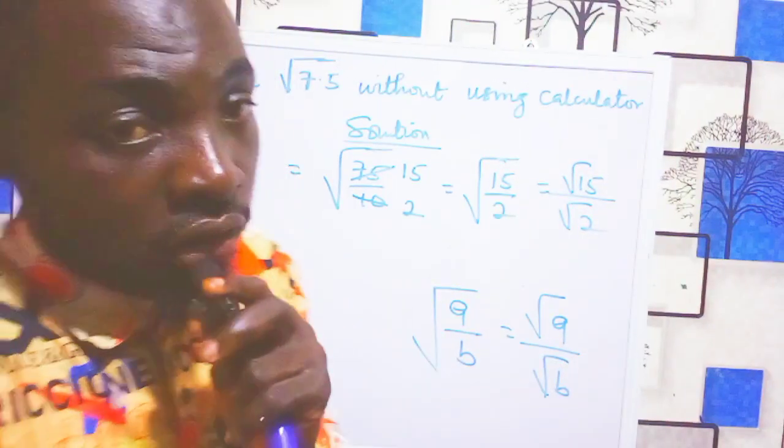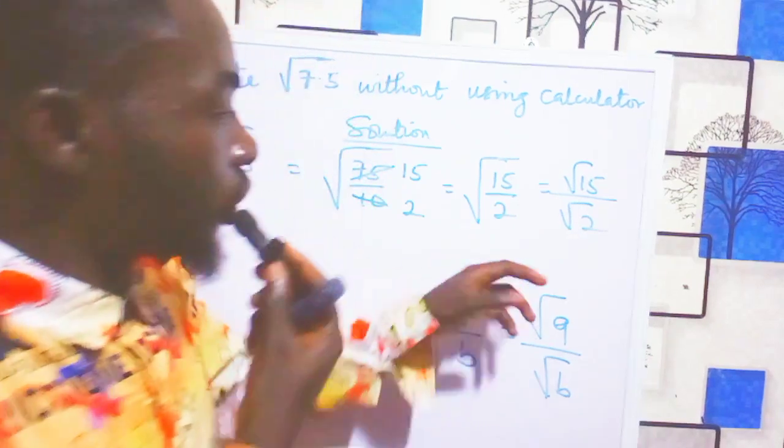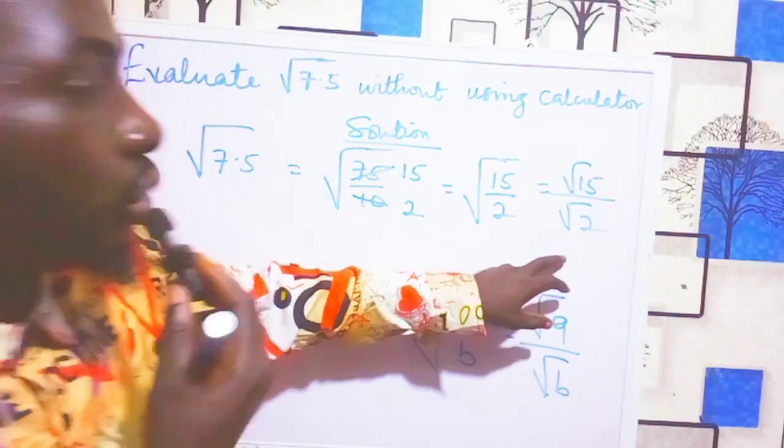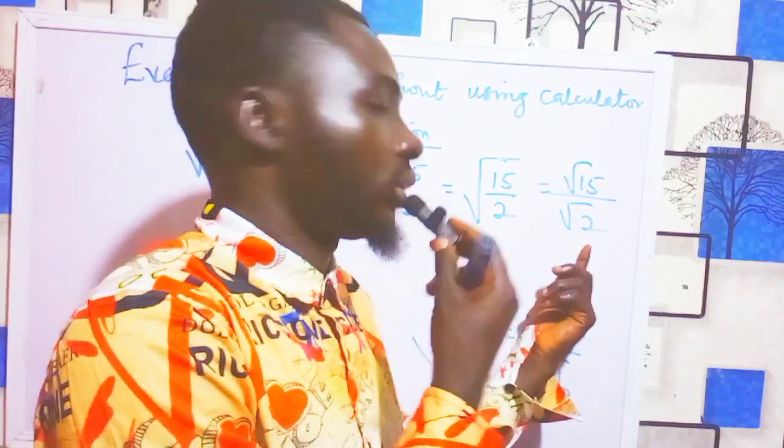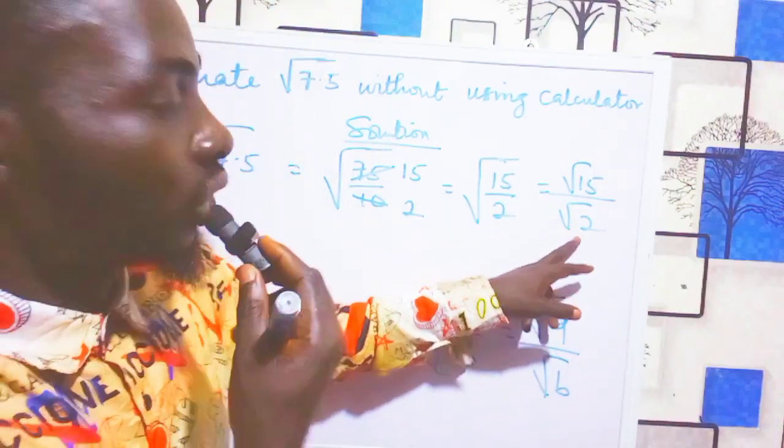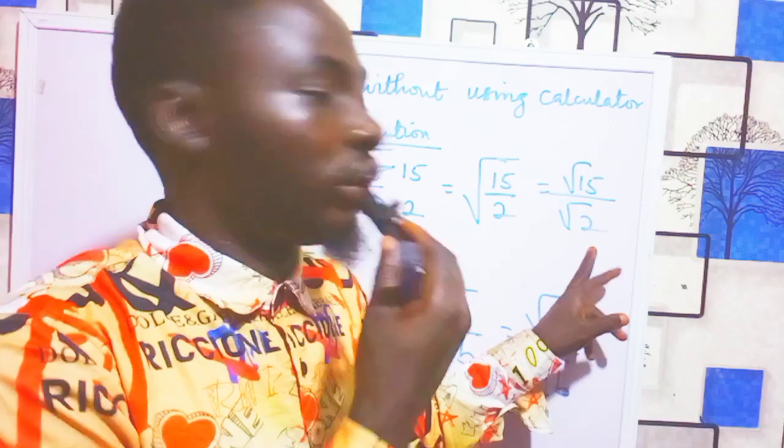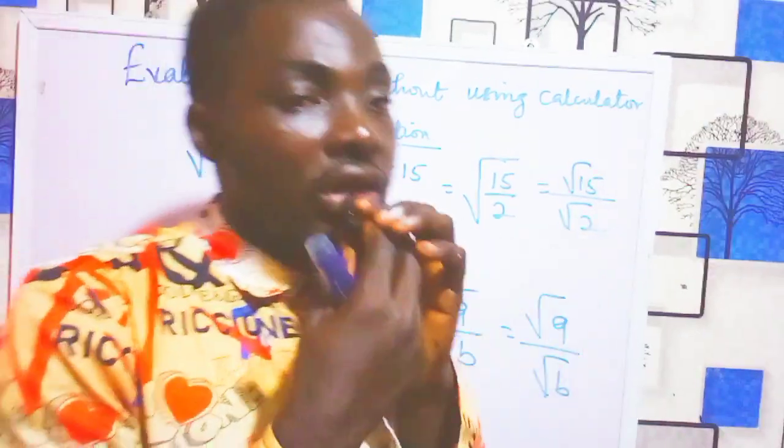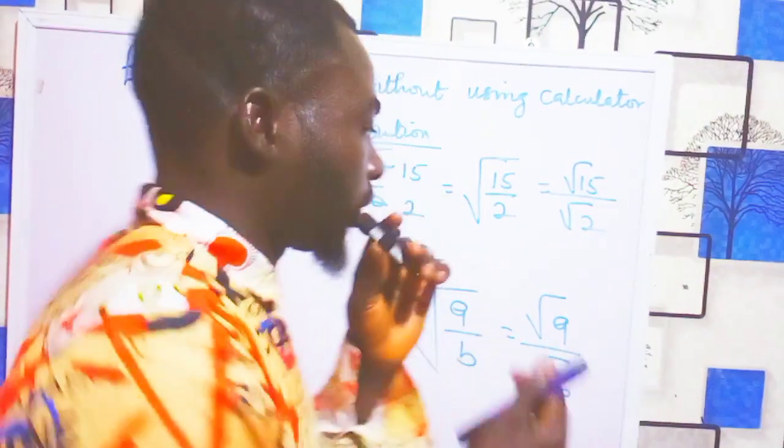You should know that in surds, it is a taboo for your denominator to be in radical form. So you have to rationalize the denominator, which means we want to make this denominator a rational number.